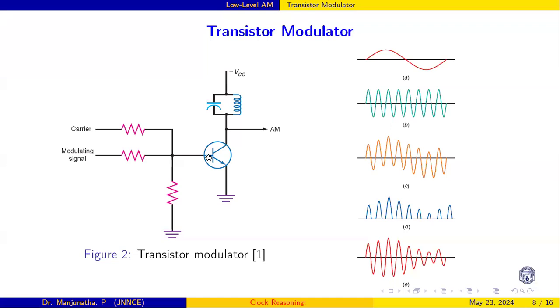This base to emitter junction is a diode. Whenever the positive cycle comes, this transistor is forward biased like a diode, then the current will start flowing.